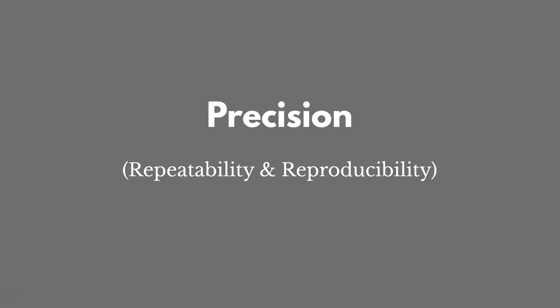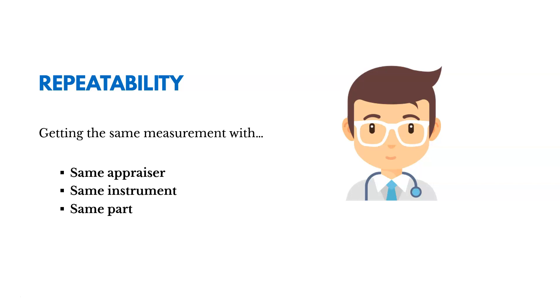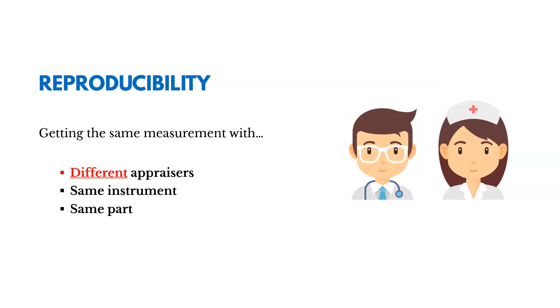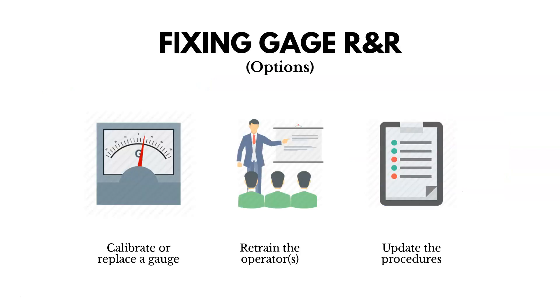Let's talk about these each in a little more detail. Starting with precision. So again, repeatability is getting the same measurement with the same appraiser, the same instrument, and the same part. It's like the doctor, measuring your blood pressure using the same instrument. Then reproducibility is getting the same measurement with different people, like the doctor and the nurse, but using the same instrument to monitor your blood pressure. Now, if we see issues with what we call gauge R&R, gauge repeatability and reproducibility, some of our options are to try to calibrate or replace our gauge, to retrain our operators, or to update our procedures. Making sure they provide enough detail and that they're actually accurate. The steps that we've listed in the procedure are correct.